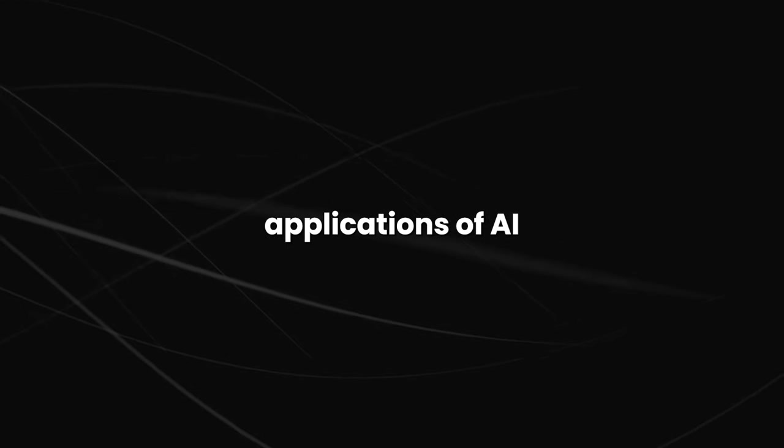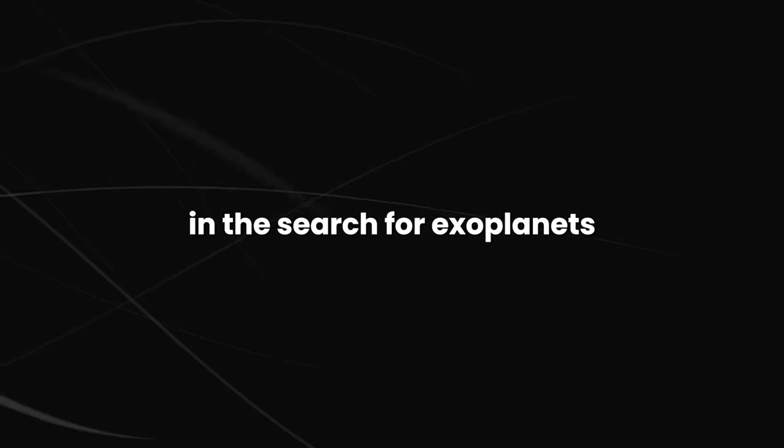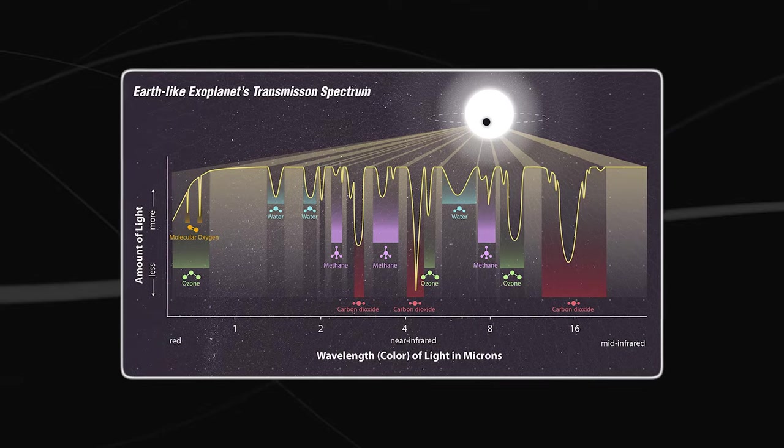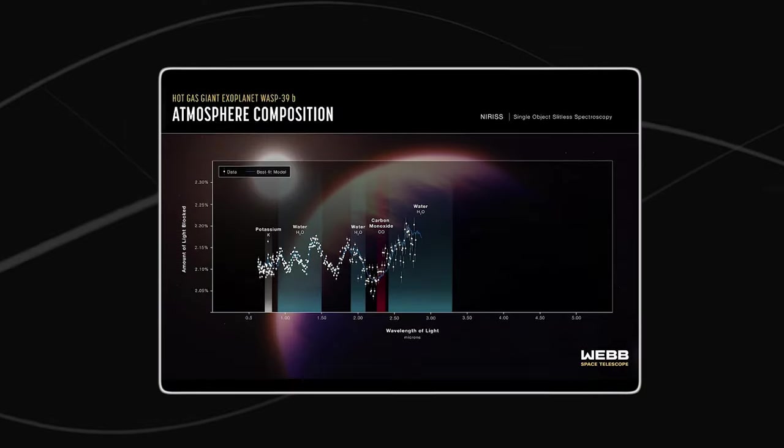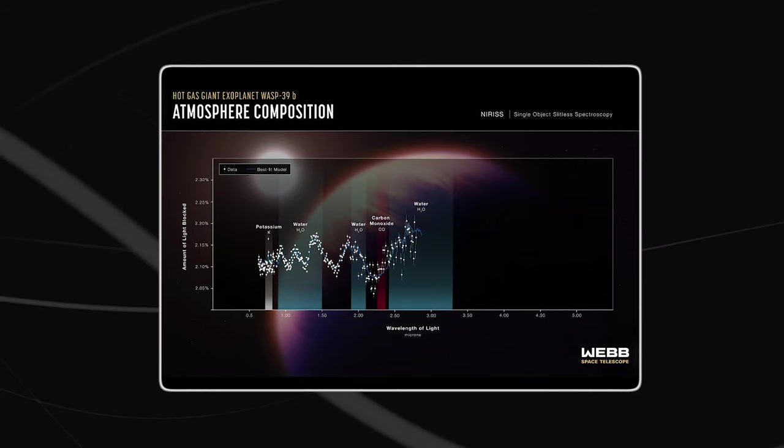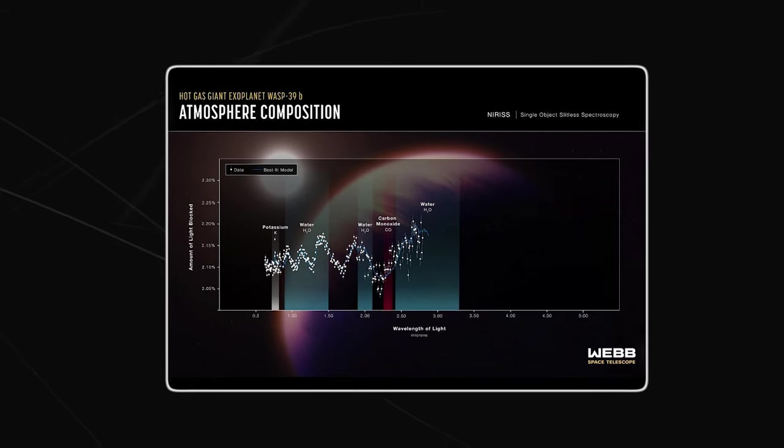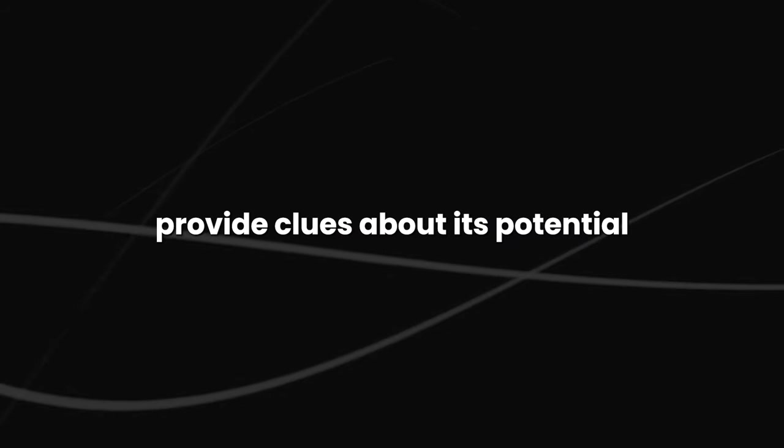One of the most exciting applications of AI in the search for exoplanets is its ability to analyze the spectrum of light from exoplanets. AI can reveal the chemical composition of the planet's atmosphere, which can provide clues about its potential habitability.